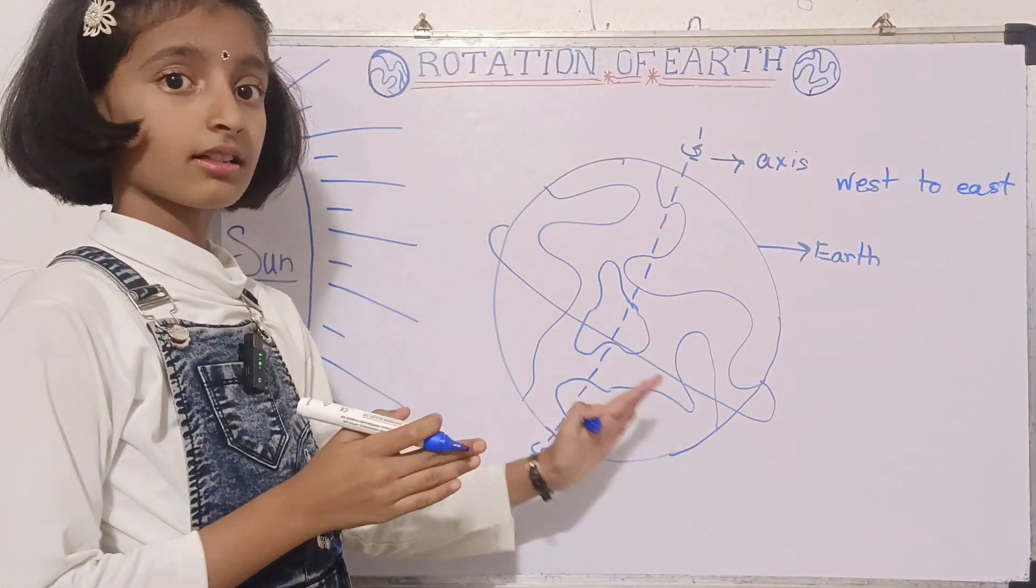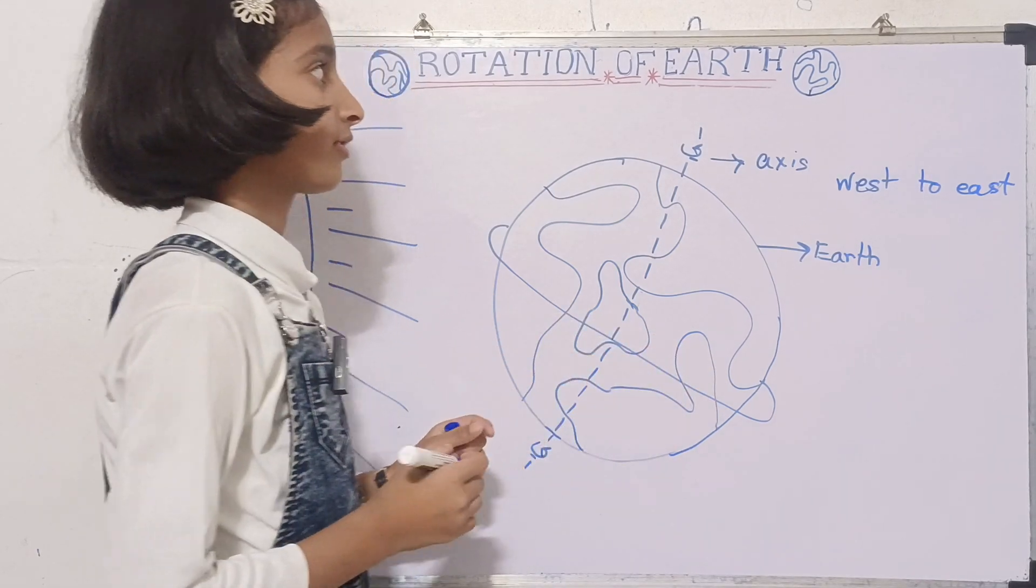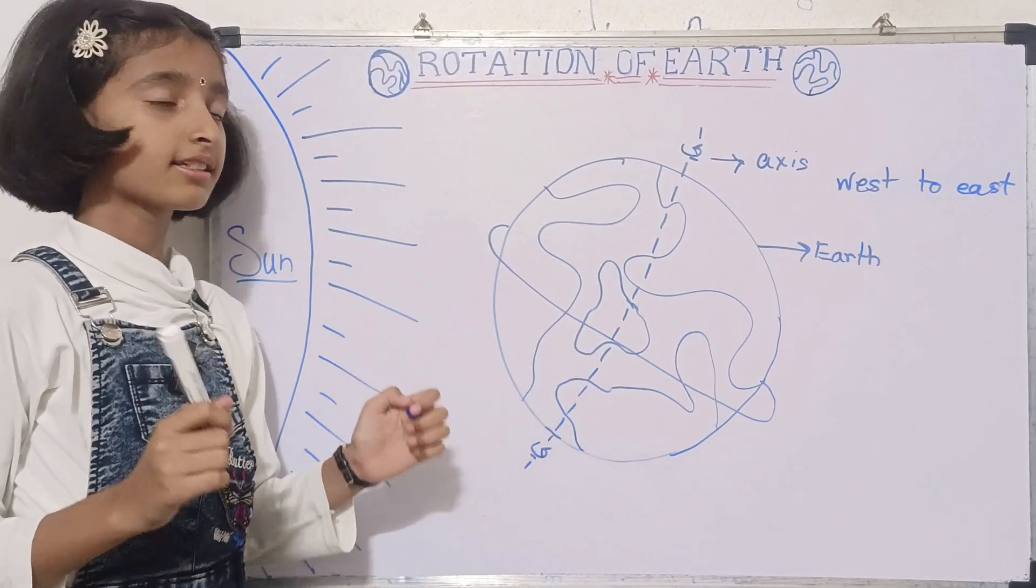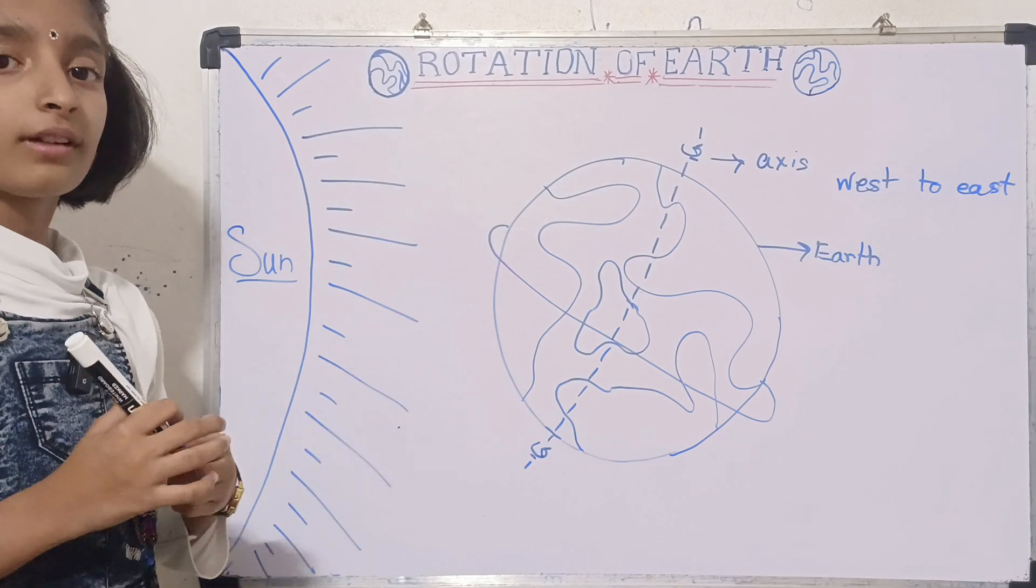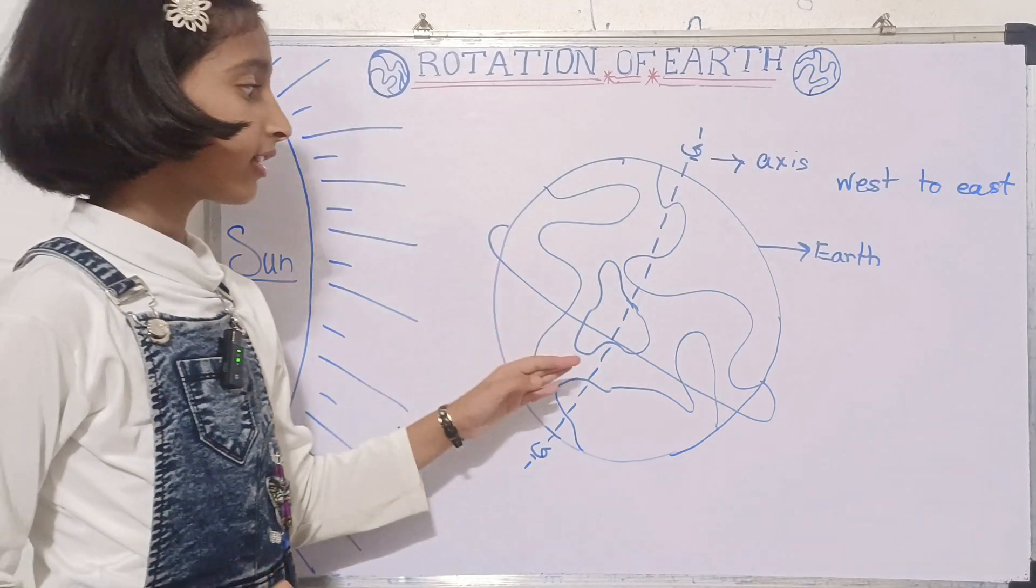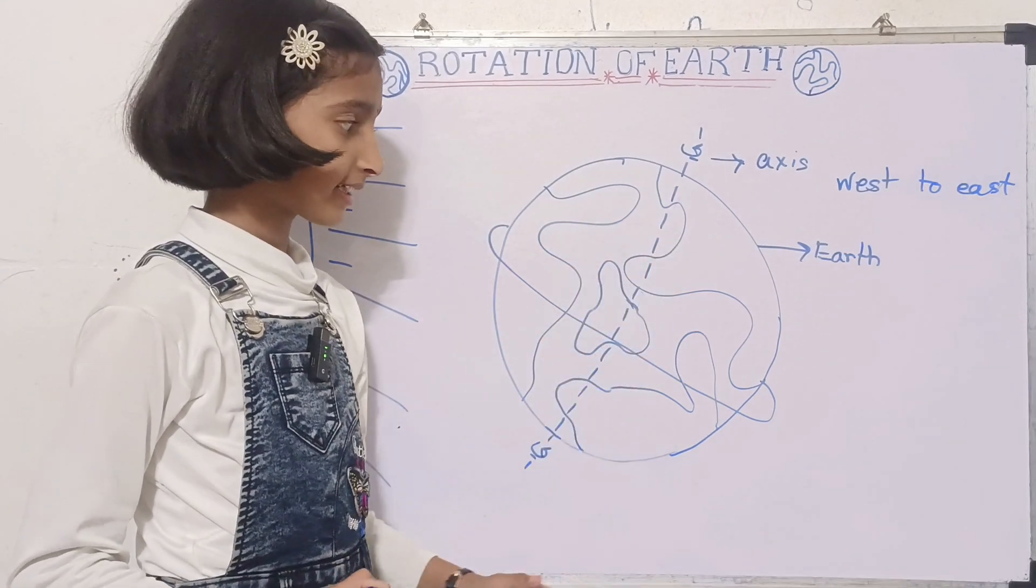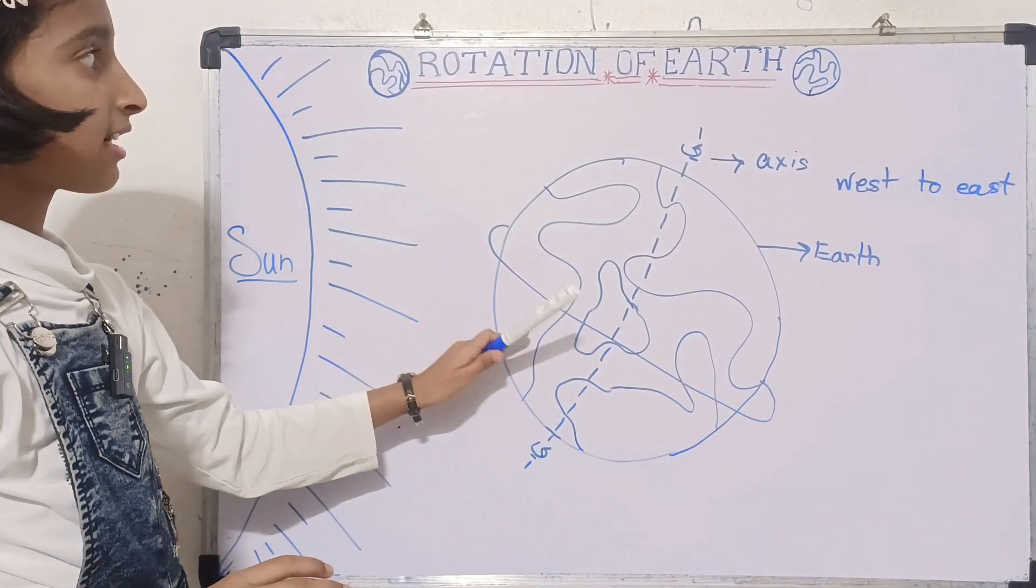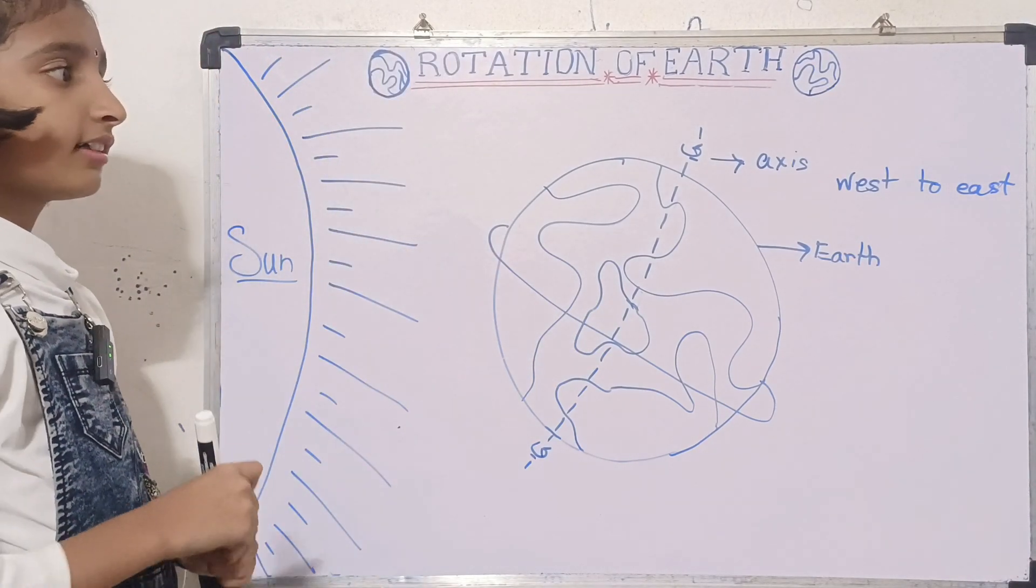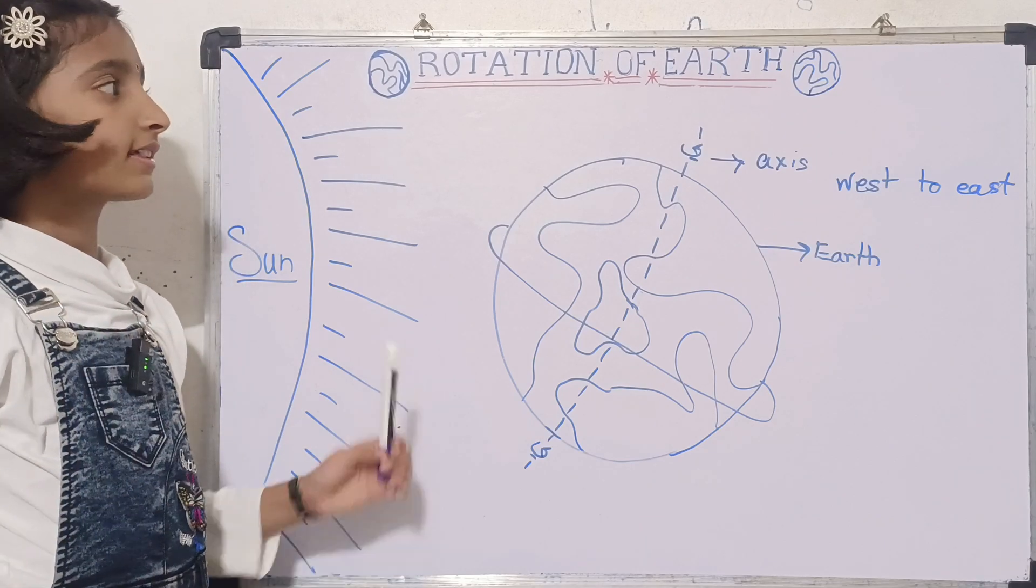The Earth is rotating west to east. Our question is, what is rotation? Rotation is when the Earth is rotating on its axis. It is called rotation, and do you know what rotation causes?